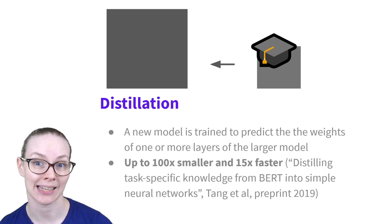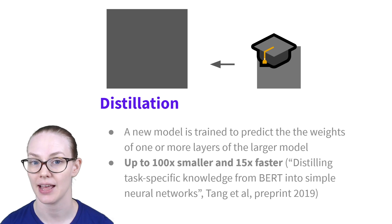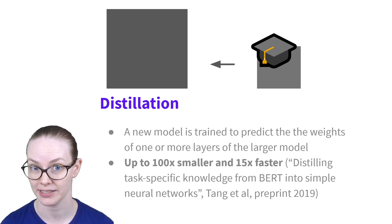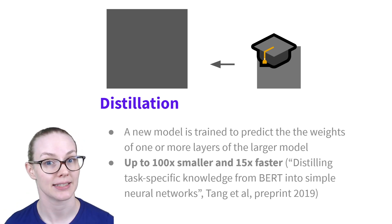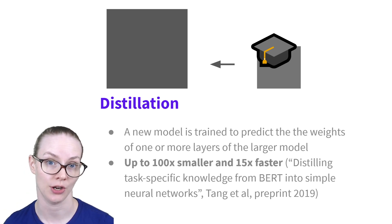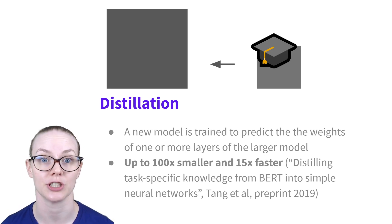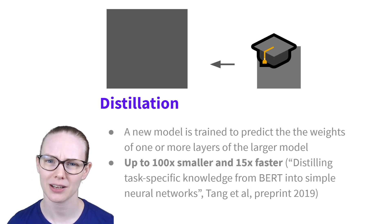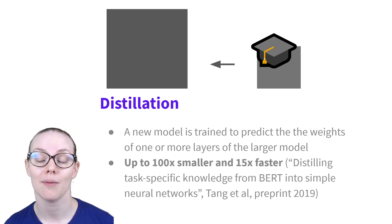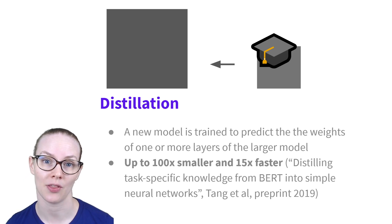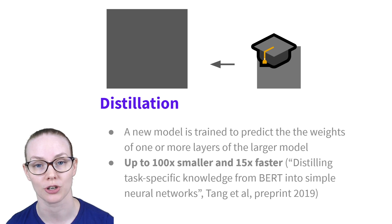Another approach is distillation. Distillation is a little bit different from the other things we've discussed in that it's not a transformation of an existing model — it's training a new smaller model. In addition to predicting the same thing as the larger model, your student model will also be rewarded for having a similar distribution of weights. Distillation can be a little bit finicky and takes more setup, but when done well, you can have a model that's many times smaller and also trains much more quickly.